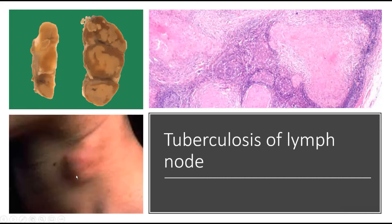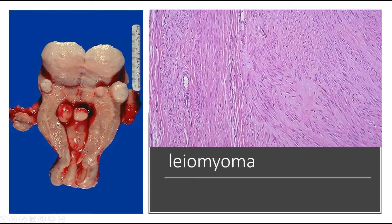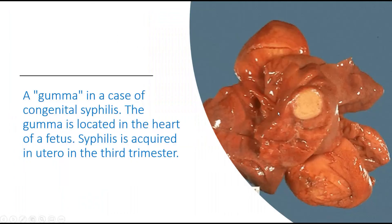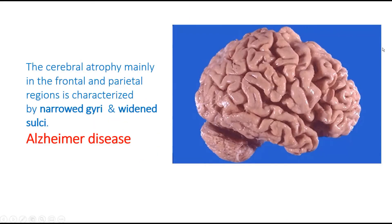Here is a patient with lymph node enlargement in the neck. Here is the gross examination of the lymph node and the microscopic examination. Here is a uterus which is enlarged with circumscribed masses — this appears to be a benign tumor called leiomyoma. And here is the brain in Alzheimer's disease, showing narrowing of the gyri and widening of the sulci, particularly in the frontal and parietal regions.